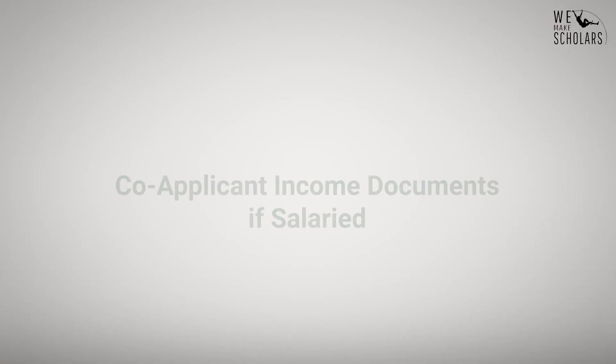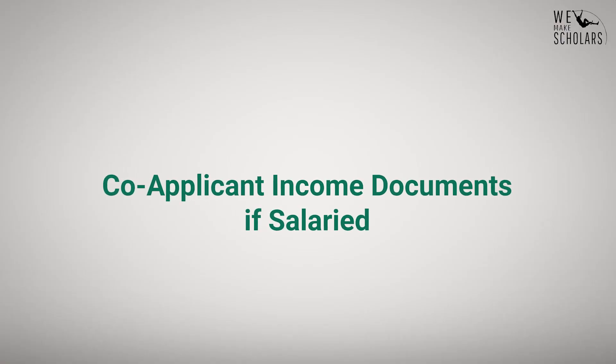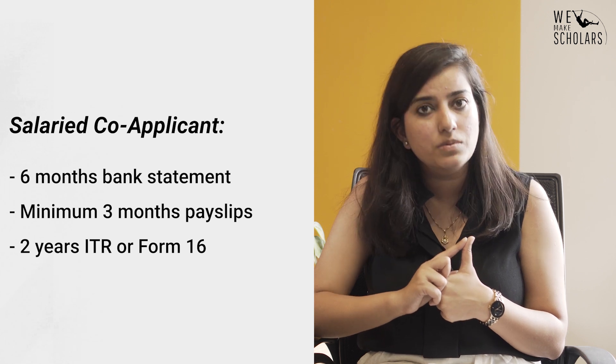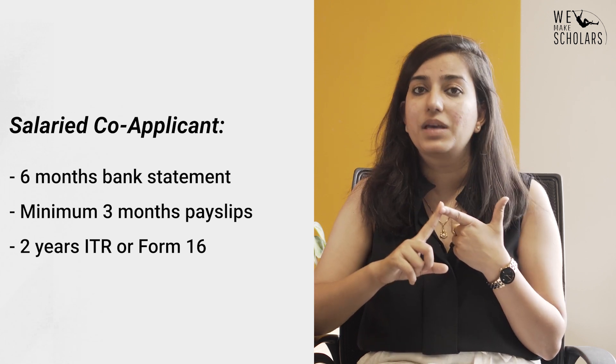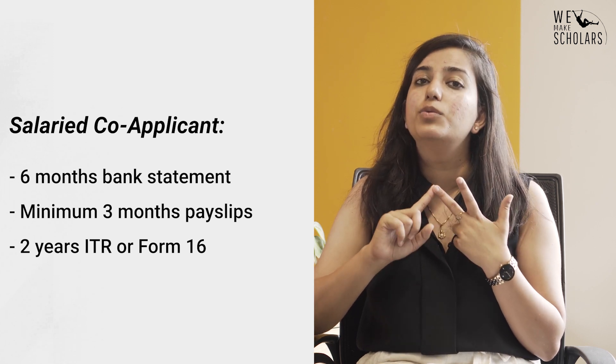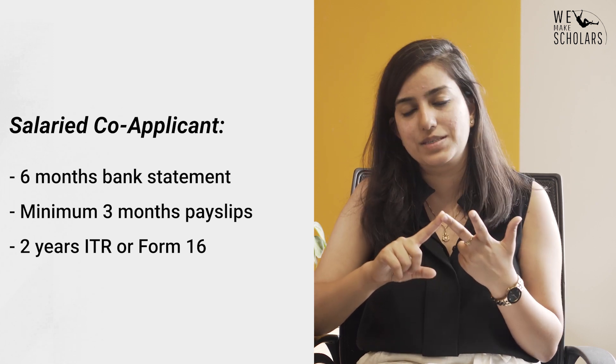I am starting the checklist with the co-applicant's income documents because that is the most crucial section and it is the one which applicants are generally not able to complete. If your co-applicant is a salaried employee, you would need their 6 months bank statement of the salary account, plus 3 months pay slips — sometimes they ask for 6 months — and finally a minimum of 2 years of ITR or Form 16.